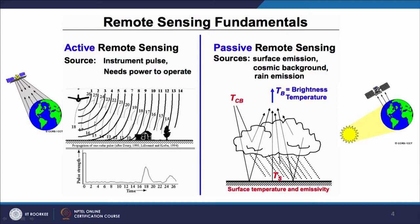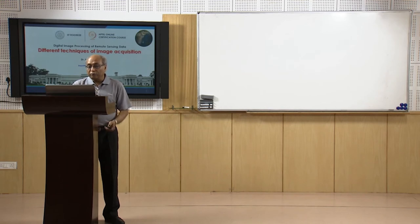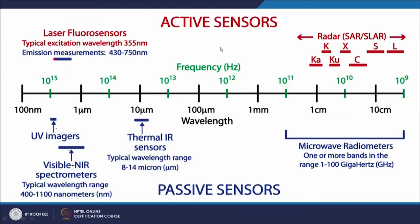Metallic objects give much more backscattering. For passive sensors, the main source of energy is the sun. What we record is thermal infrared brightness temperature or reflectivity coming through the atmosphere to the sensor. Passive sensors can record surface emission — thermal, cosmic background, rain emission — all can be recorded by passive sensors. The EM spectrum is shown with active sensors in red and passive sensors in blue.